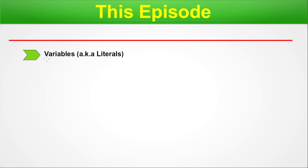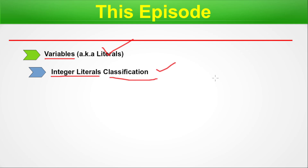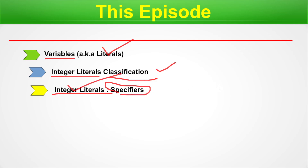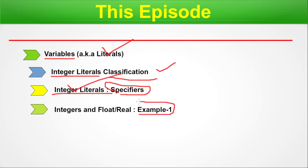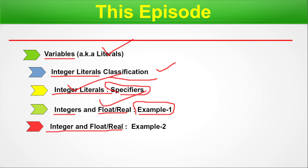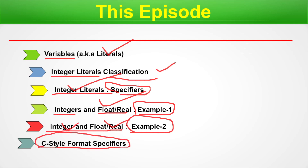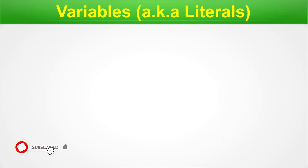Welcome back. In today's episode we are going to discuss the following points: first, various variables called literals in Python; next, integer literals classification covering different number systems; then specifiers for integer literals; followed by examples for integers and floats using Python code; and finally, how C-style formatting can be done using format specifiers in Python for printing output.